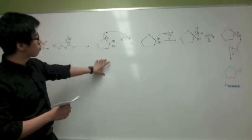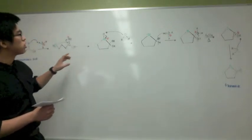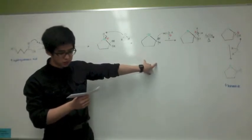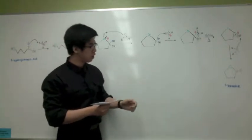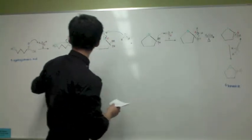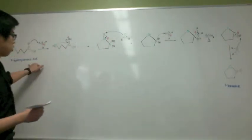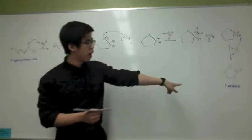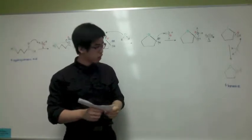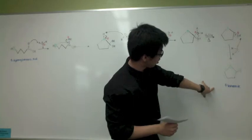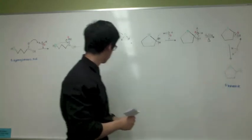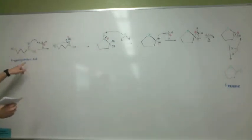It forms spontaneously if it forms a five or six-membered ring. For naming purposes, we replace the '-oic' of the carboxylic acid with '-olide' for the lactone, and we specify the number of the oxygen as it was in the hydroxy acid.